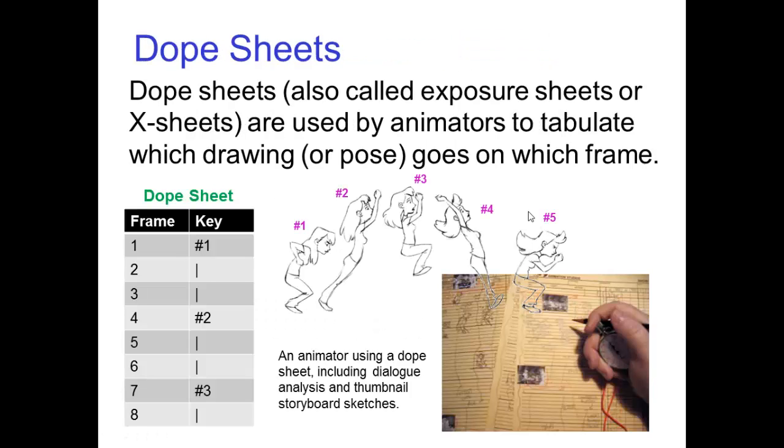Dope sheets, also called exposure sheets or X-sheets, are used by animators to tabulate which drawing or pose goes on which frame. Now these dope sheets are more common in traditional hand drawn animation, but they're useful in general when thinking about timing and spacing. In this dope sheet for an animation shot on threes, key number one is on frame one, then key number two is on frame four, and so forth.